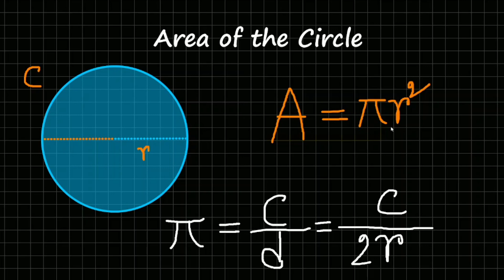In this video I'll try to show you a beautiful visual and intuitive proof of this. But let's have a look at the formula again. We know that r here represents the radius of the circle, but what about pi? Pi is nothing other than the ratio of the circumference of the circle and the diameter of the circle, which I denote here by c and d respectively. The diameter is twice as large as the radius.